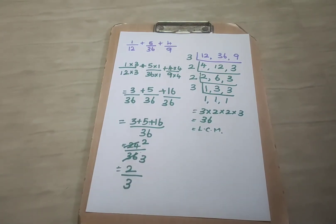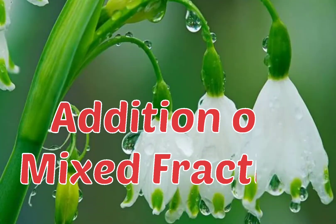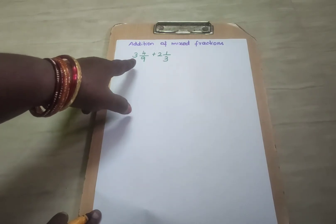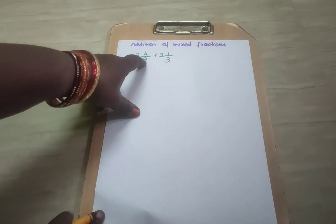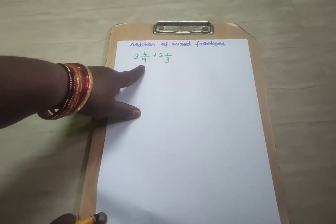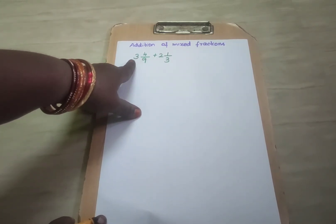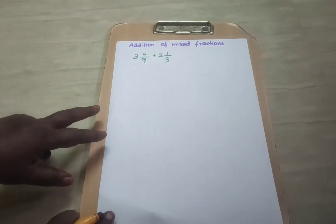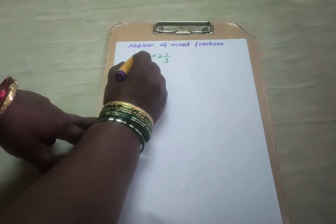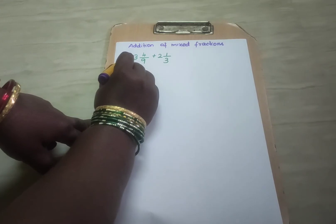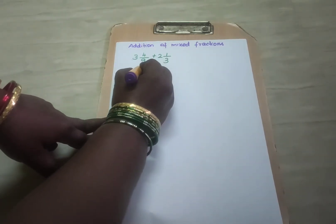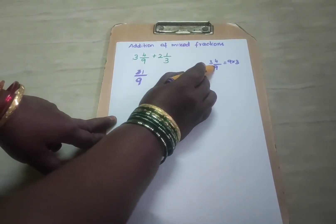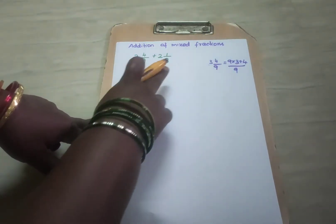This is the way to find the addition of unlike fractions. Here we are going to see addition of mixed fractions. Both the fractions are in mixed form: 3 and 4 by 9 plus 2 and 1 by 3. Whenever the denominators are different we find the LCM, but here a mixed fraction is given. So first we have to convert the mixed fraction into an improper fraction. We multiply the whole number by the denominator — 9 threes are 27 — and 27 should be added with 4. That is 27 plus 4.